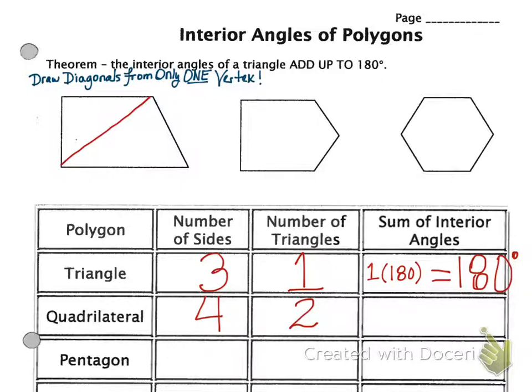All right, so now we're going to find the sum of the interior angles. You probably said 360 — well, you're right, it is 360. But how did you get 360? You took the number of triangles, which is 2, times 180.